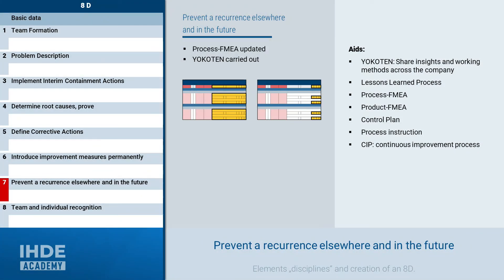To prevent this failure or a similar one from occurring again, the FMEA must be updated. The knowledge gained and the new way of working should also be shared throughout the company in order to avoid similar mistakes at other locations. This approach is called YOKOTEN — this abbreviation stands for sharing the best ideas.